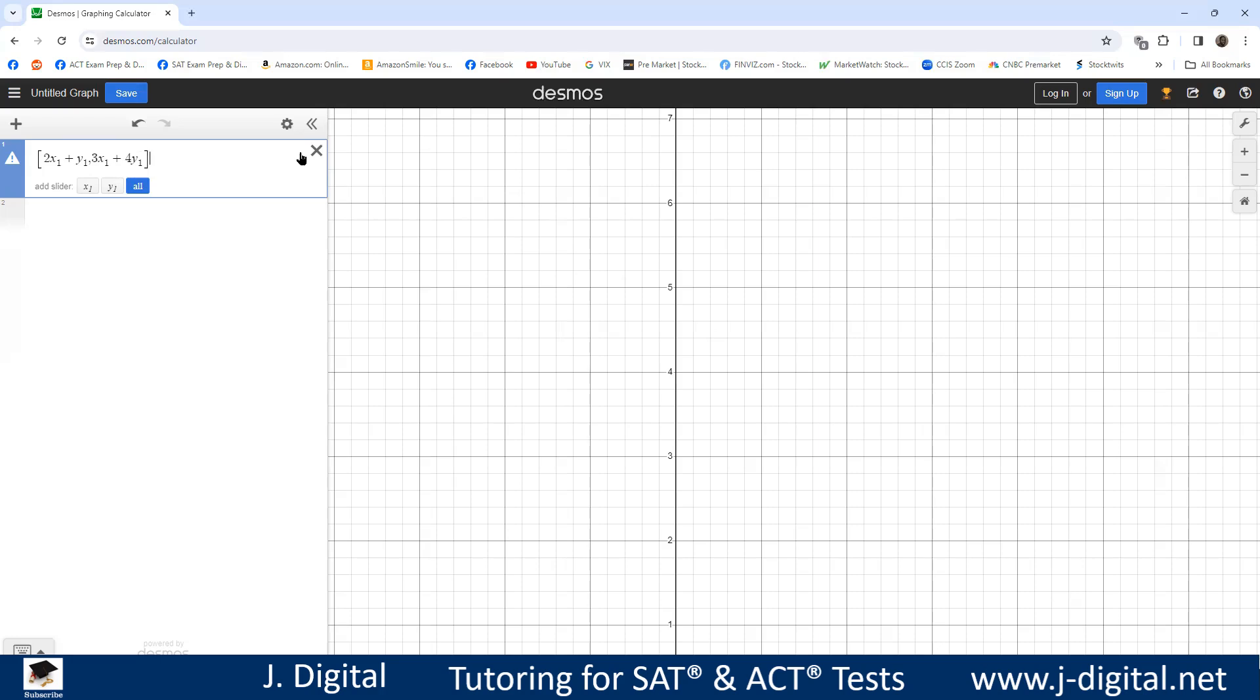And then on the right side of those equations, now here I need to do the tilde, which is shift and then the button next to your one on your keyboard above the tab button. And then 6 comma 19.